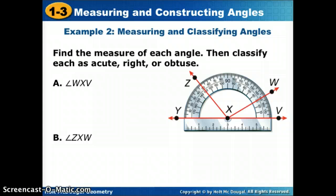If it says find the measure of WXV, we see that XV is on zero. Since we're on the right side of the protractor, we're going to use these numbers, and we see that that angle goes from zero to 30. So WXV is 30 degrees. If we wanted to classify that, 30 is less than 90, so that is an acute angle.